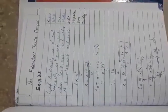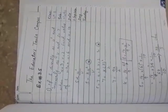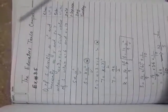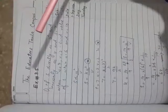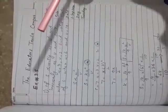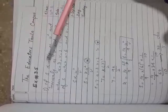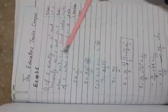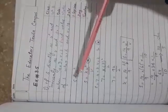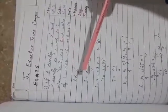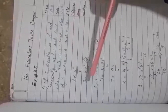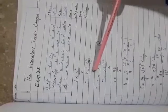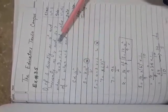Assalamu alaikum students, this is the third and last part of today's lecture from exercise number 3.5. 3.5 is the same as 3.2. If s varies directly as u square and inversely as v, the formula is s is equivalent to k u square divided by v.